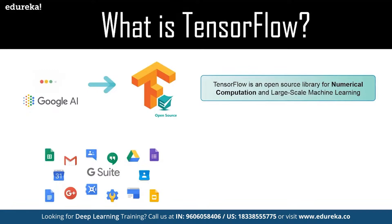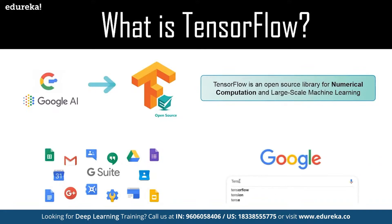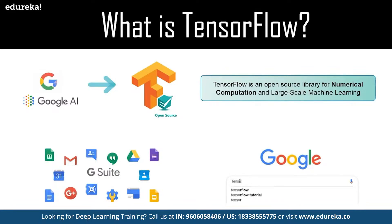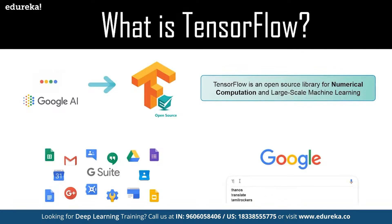Google uses machine learning in all of its products to improve the search engine, translation, image captioning, and recommendations. For example, when a user types a keyword in the search bar, Google provides a recommendation about what the next word could be — a faster and more refined search powered by artificial intelligence.